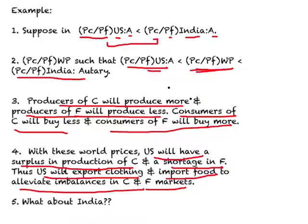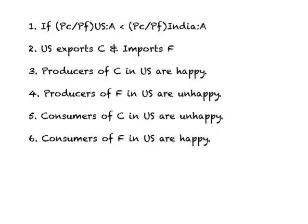Whatever we considered for the US, India does the opposite. Since the relative price of clothing in the US in autarky is lower than in India in autarky — meaning clothing is relatively cheaper in the US — the US will export clothing and import food, while India will export food and import clothing.